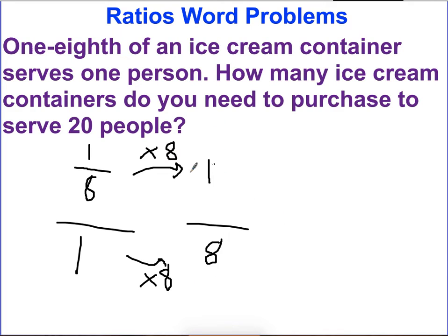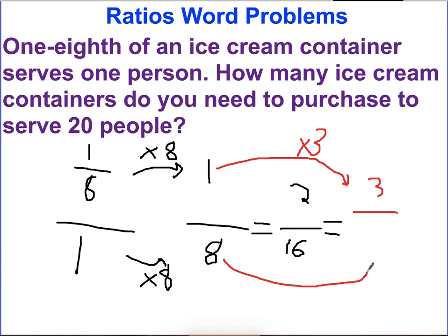And then I can use this as my ratio because using whole numbers might be easier. So let's make equivalent fractions here and equivalent ratios. So times two would be two containers for 16 people. And then let's go back to the beginning. One, we're going to just say times three would be three containers. Eight times three would be 24 people.